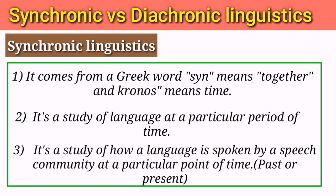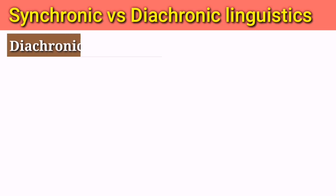Let me tell you in simple words. With the passage of time, a language changes — its grammar, phonology, and vocabulary. But in synchronic linguistics, you avoid studying its development and changes, and instead study a language at a particular point in time — how it is spoken. It could be in the past or in the present. For example, if you start studying the English language at this point in time and do not consider its development from Old to Middle to Modern English, that approach is known as synchronic linguistics.